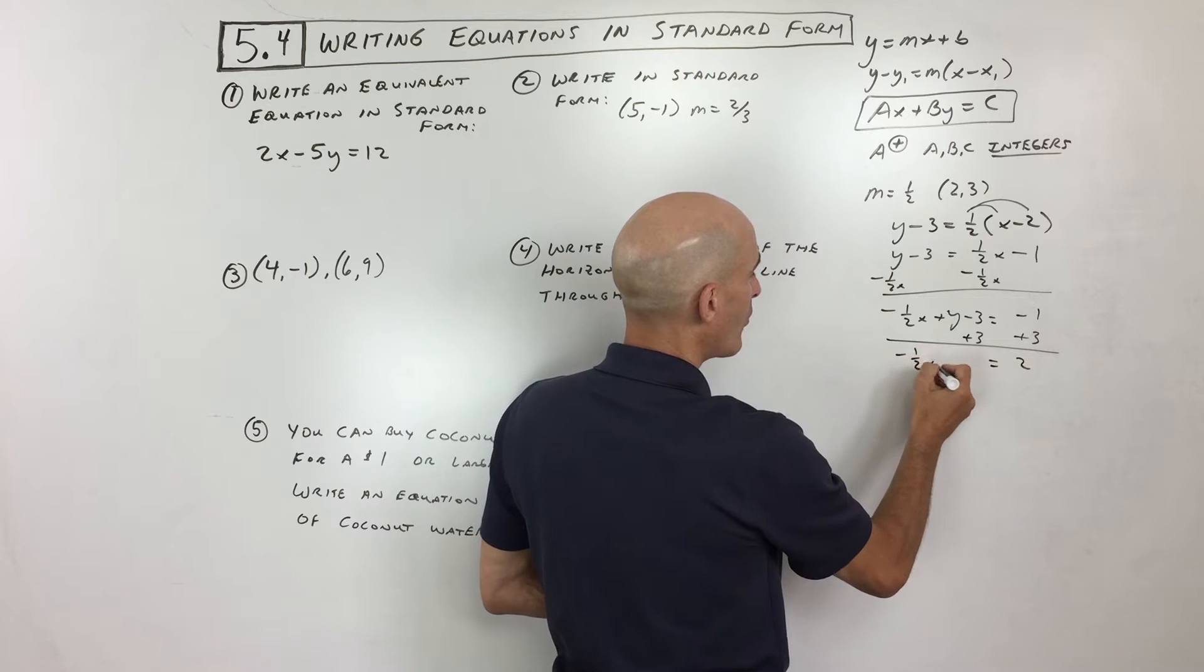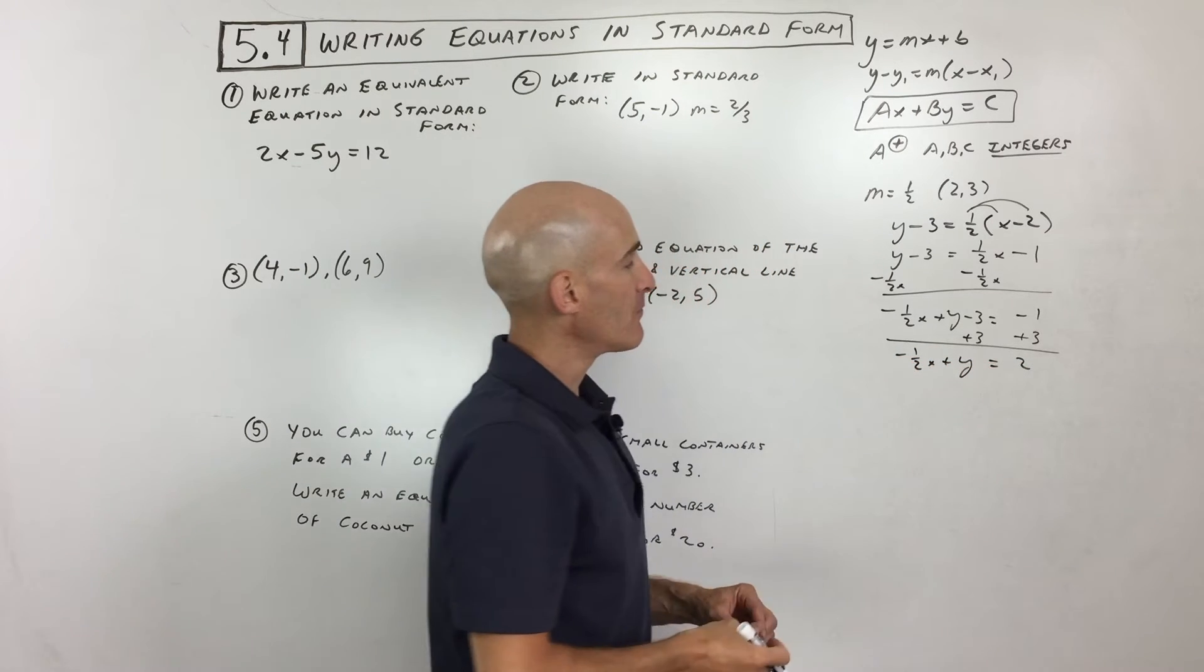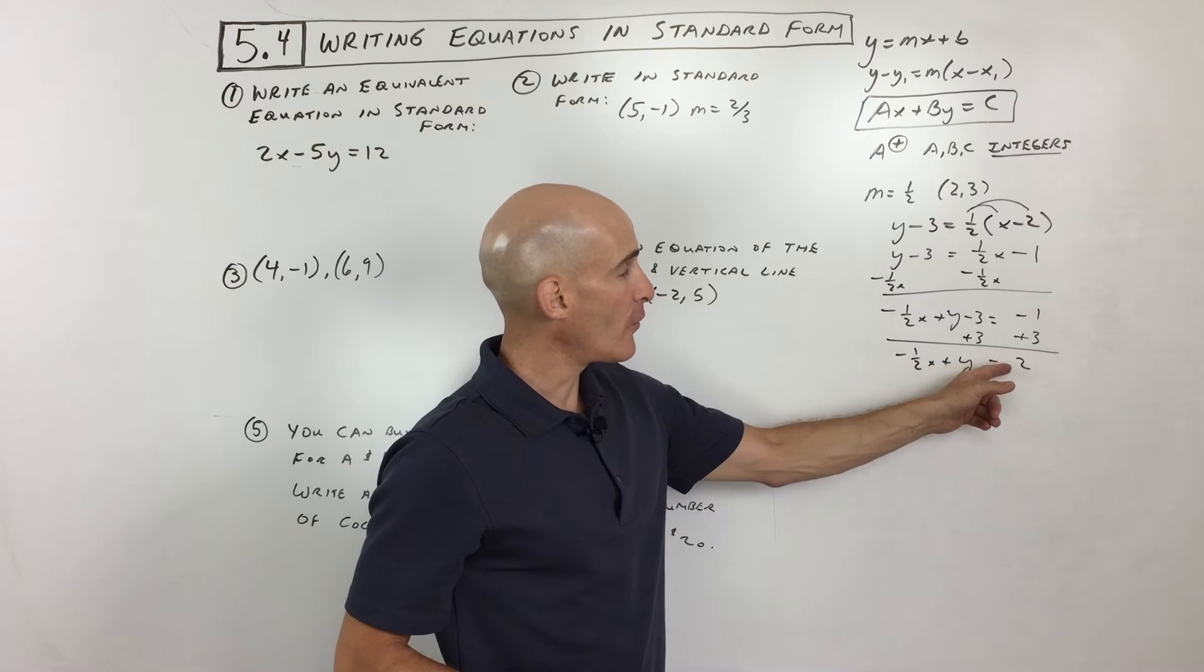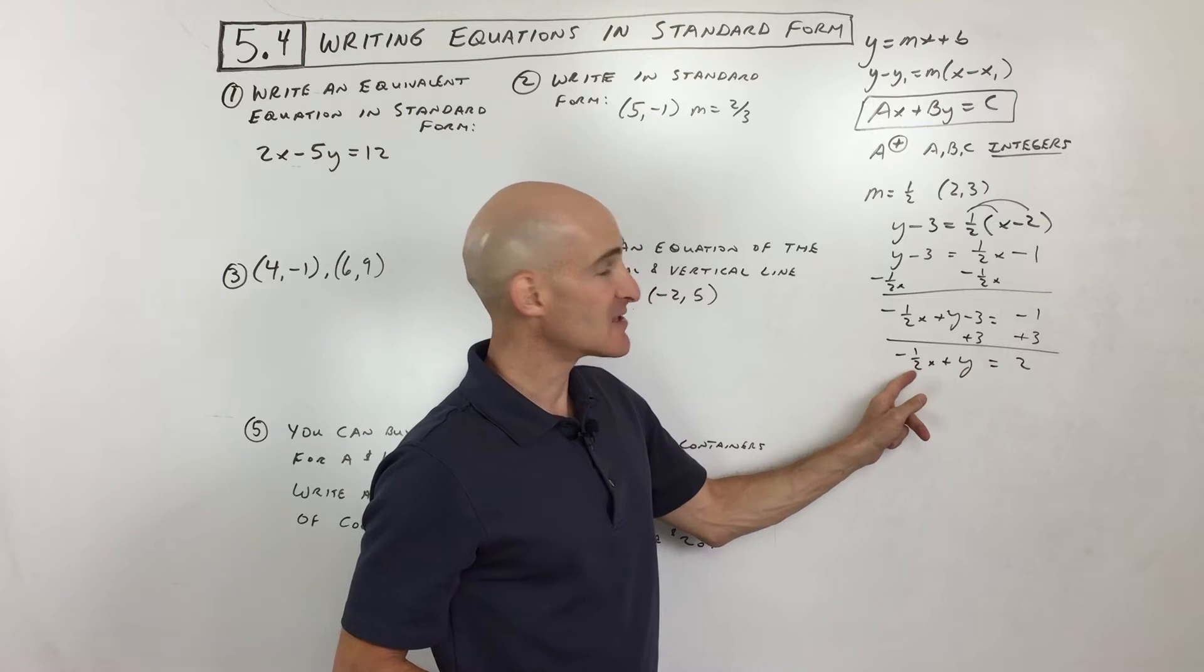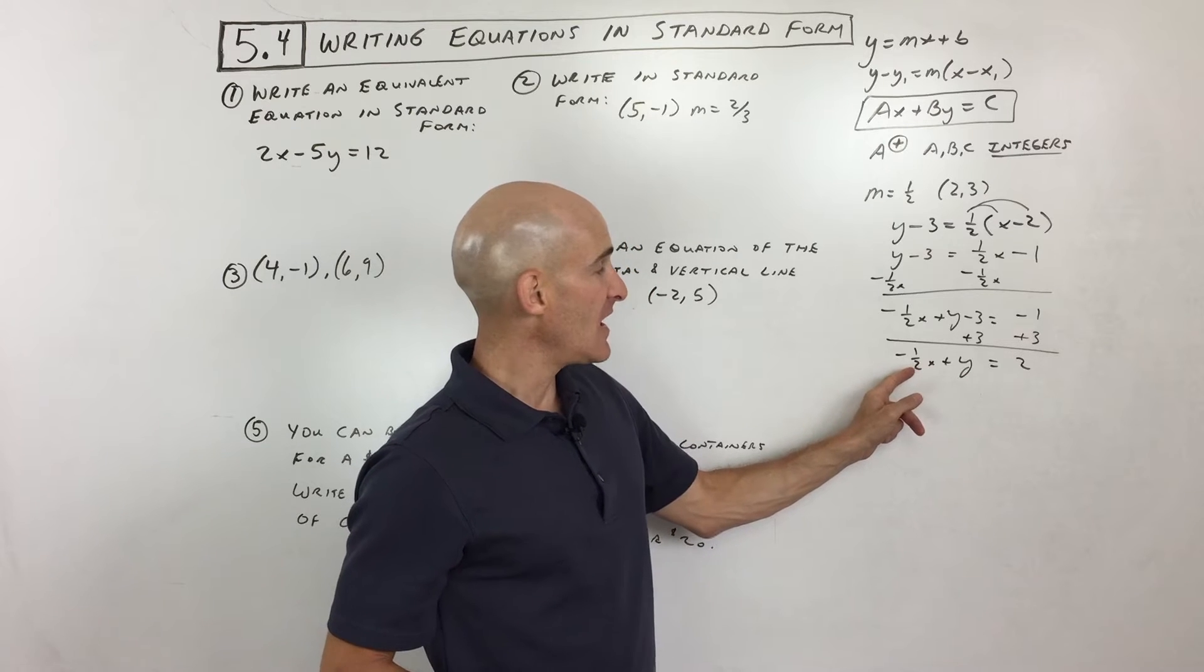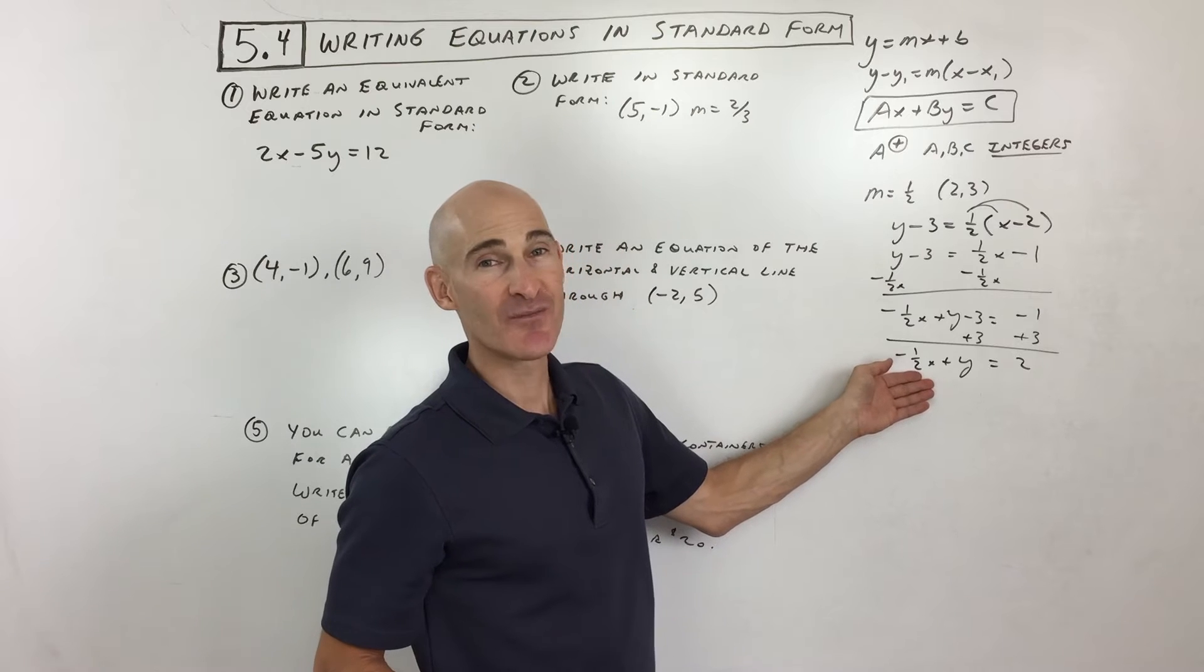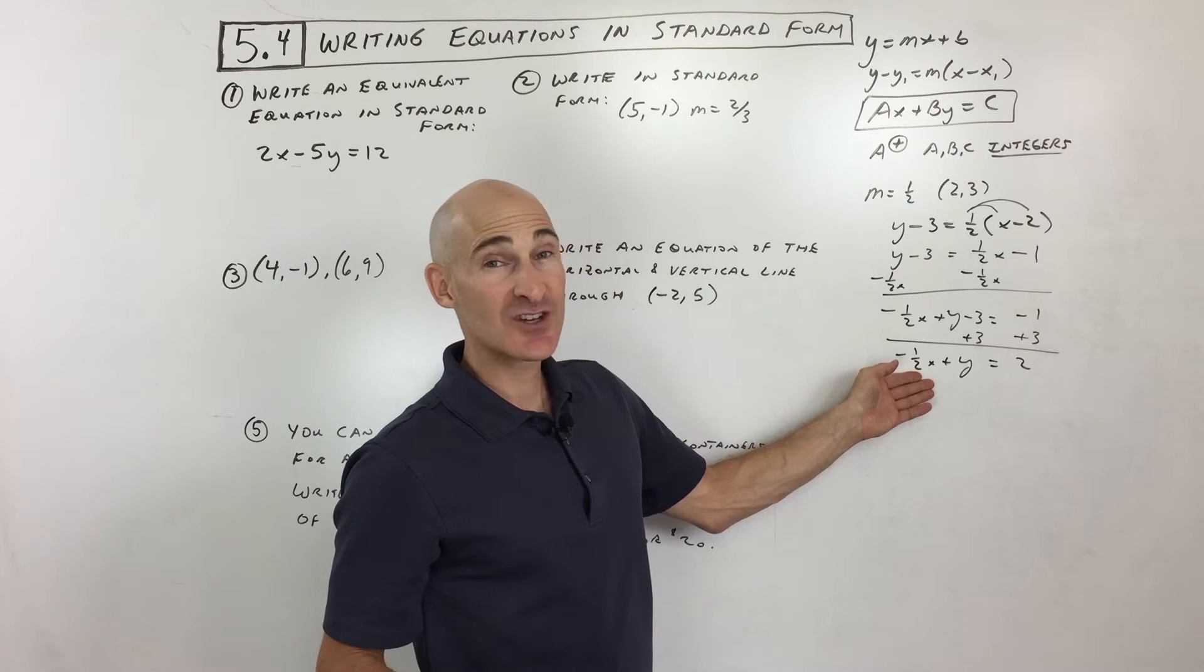So that's 2. So let's look at what we have so far. Now, we've got the variables on the left, numbers on the right, but we want all the coefficients to be integers. So we want a, b, and c to be integers. This is not an integer. It's negative one-half. So what do you think we can multiply by to make this an integer? Okay, well, if you said 2, you're absolutely right.